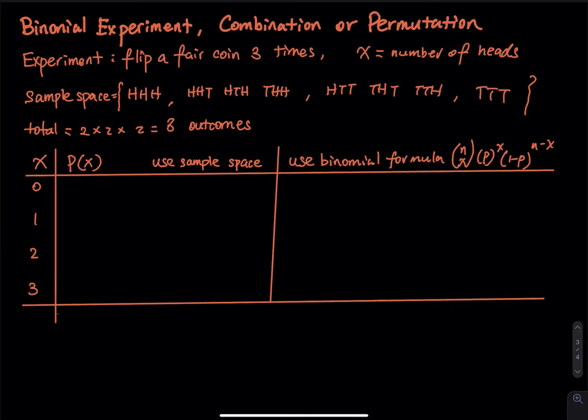So we start with three heads, then two heads, then one head, then zero heads. There are eight outcomes in this sample space because each coin has two faces — three coins gives two times two times two, which equals eight.